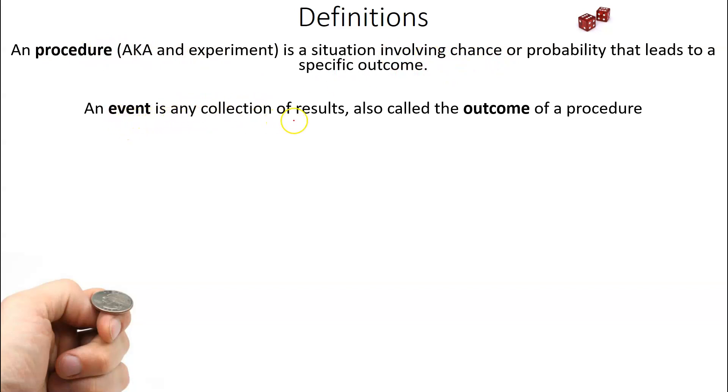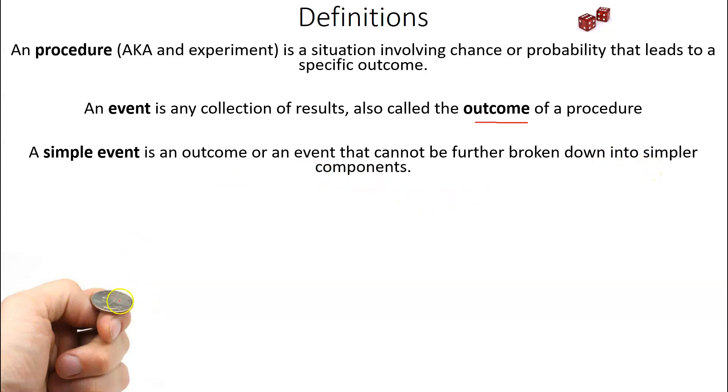An event is any collection of results, also called the outcome. Typically, I'll use the term outcome of a procedure. A simple event is an outcome or an event that cannot be broke down into simpler components. For example, if you talk about the probability of flipping a coin, it's pretty simple, pretty straightforward. It's what's considered a simple event. But if you talk about, let's say, that your car has a flat tire, while at the same time you're getting hit with one-inch hail, that is no longer a simple event, because you're looking at the probabilities of two things happening or occurring at the same time.